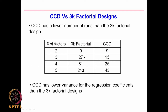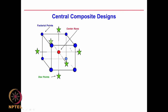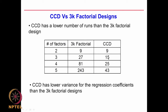Going to 4 factors: 3^4 = 81 experiments, while CCD requires only 25. For 5 factors: 3^5 = 243 experiments whereas CCD gives only 43. So the number of experiments goes down dramatically with CCD, and it has lower variance because we are looking at different levels of each factor. We can also go to fractional factorial versions of 3K designs.